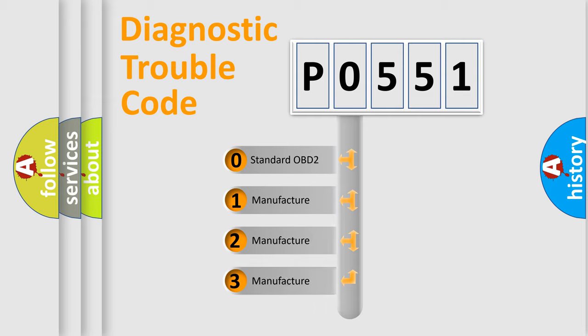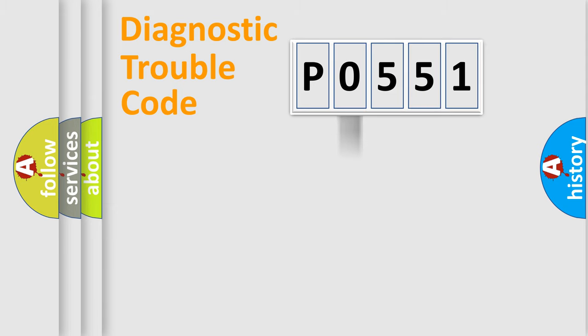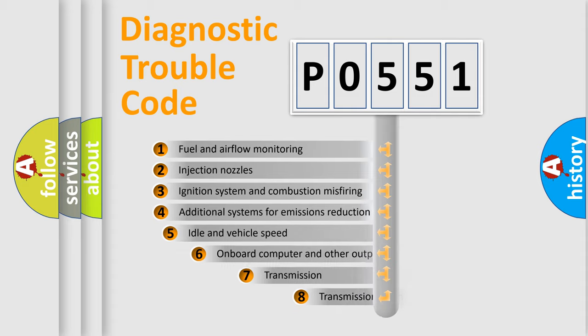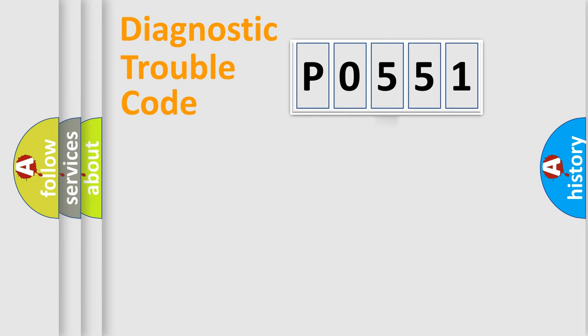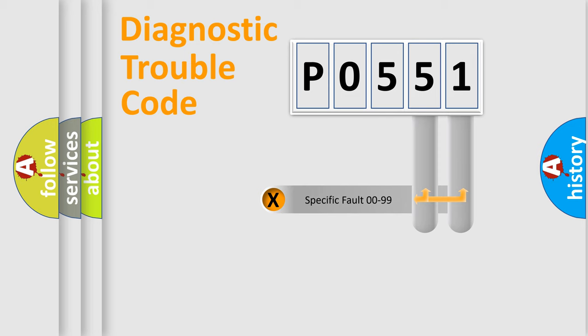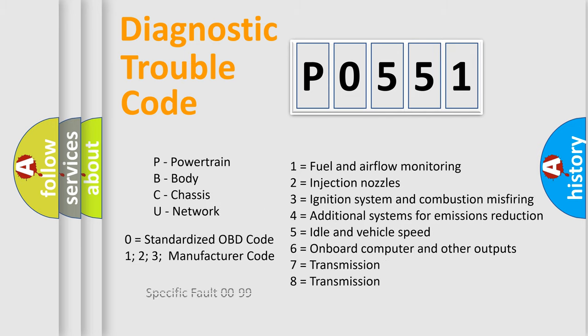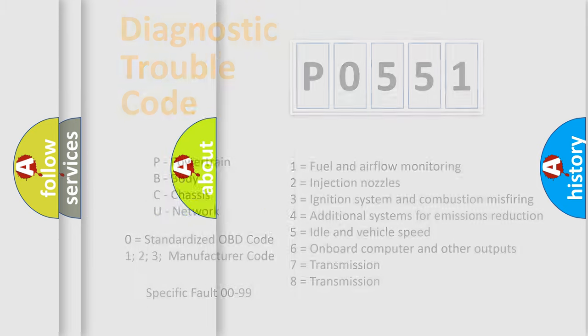If the second character is expressed as zero, it is a standardized error. In the case of numbers 1, 2, or 3, it is a manufacturer-specific error. The third character specifies a subset of errors. This distribution is valid only for standardized DTC codes. Only the last two characters define the specific fault of the group, and this division is valid only if the second character is zero.